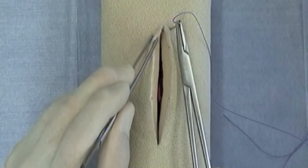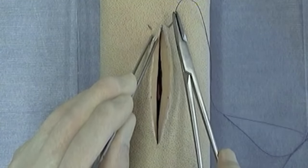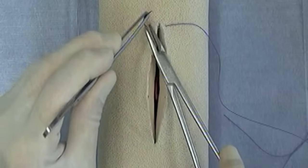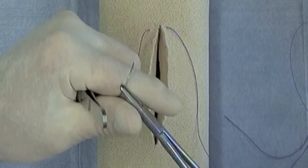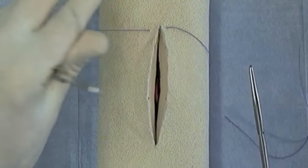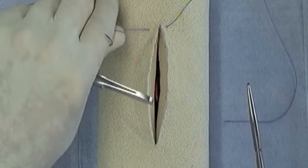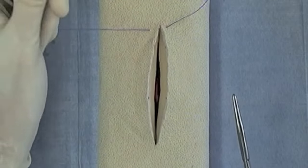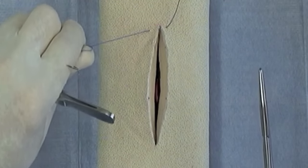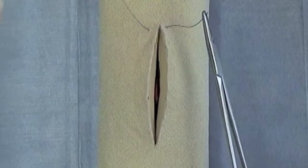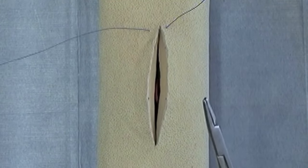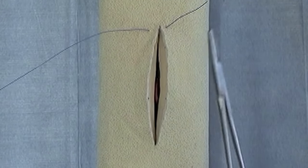Full thickness bite, full thickness bite. Notice I'm tucking away the needle and using a technique to gather suture. Gathering suture is something that you should learn throughout this course. It's a good technique to maintain control of your suture in an orderly fashion.